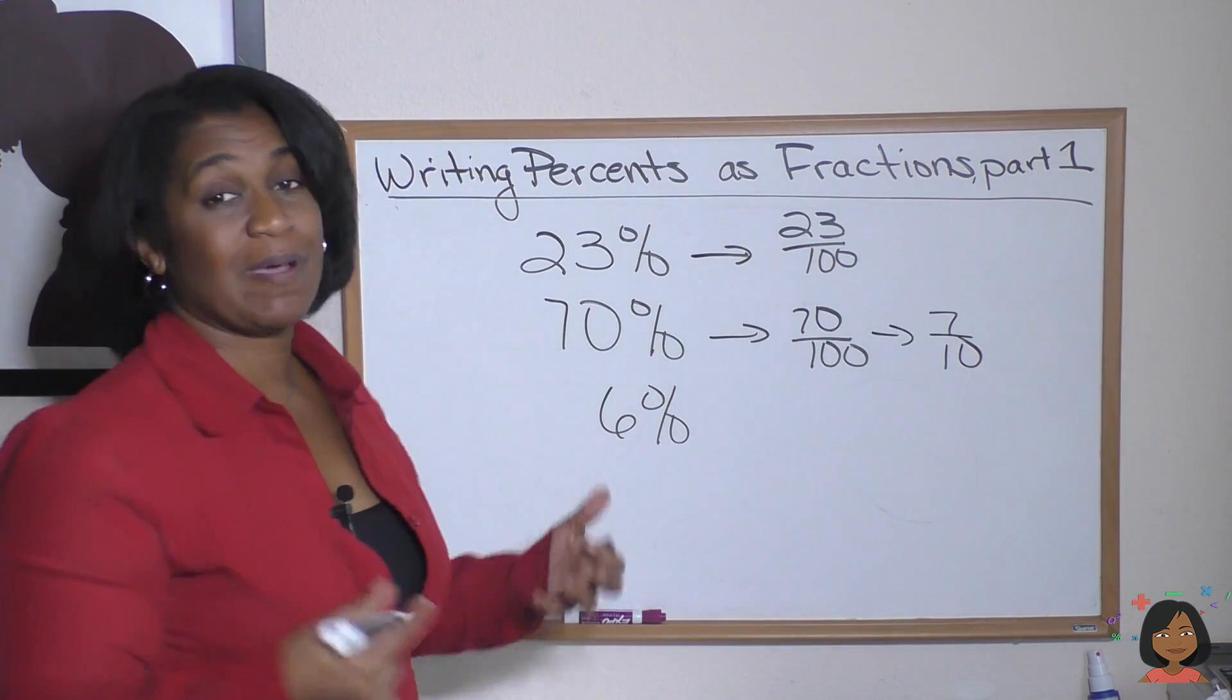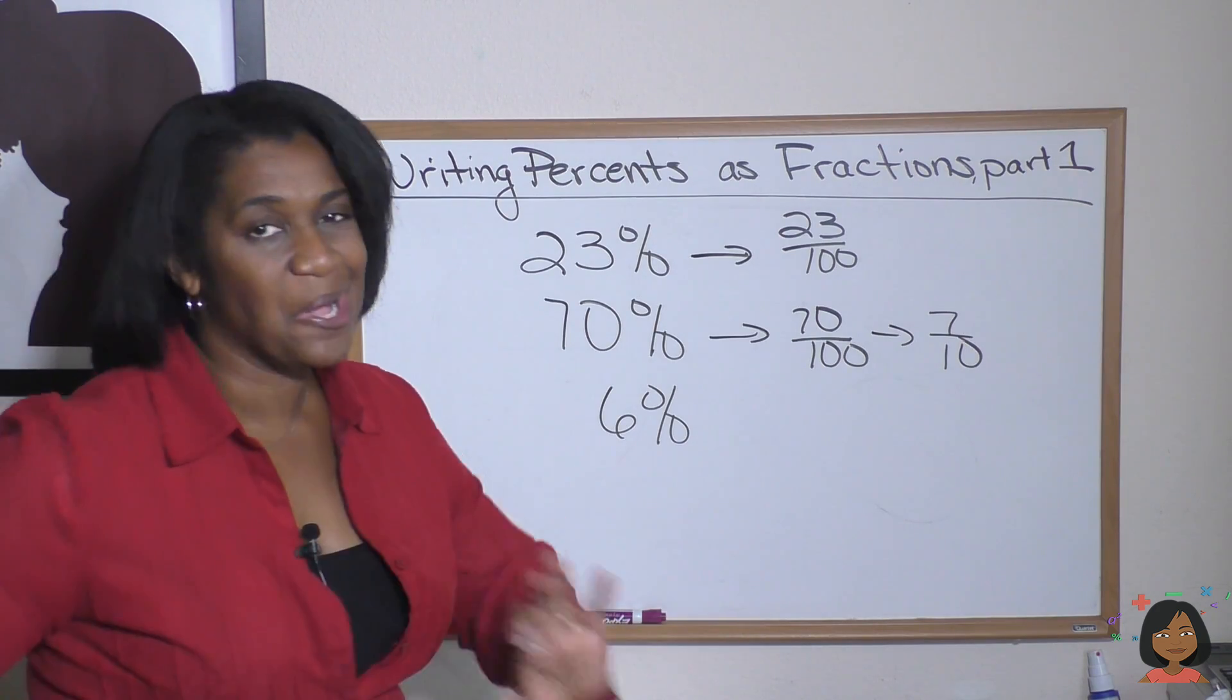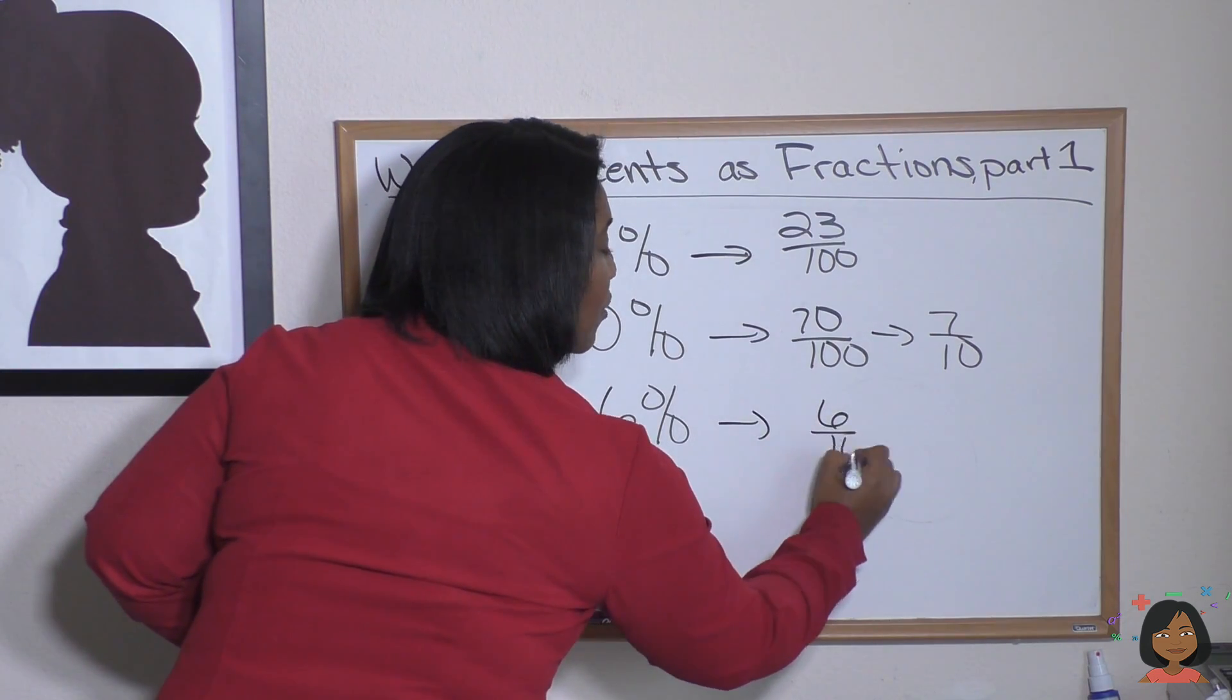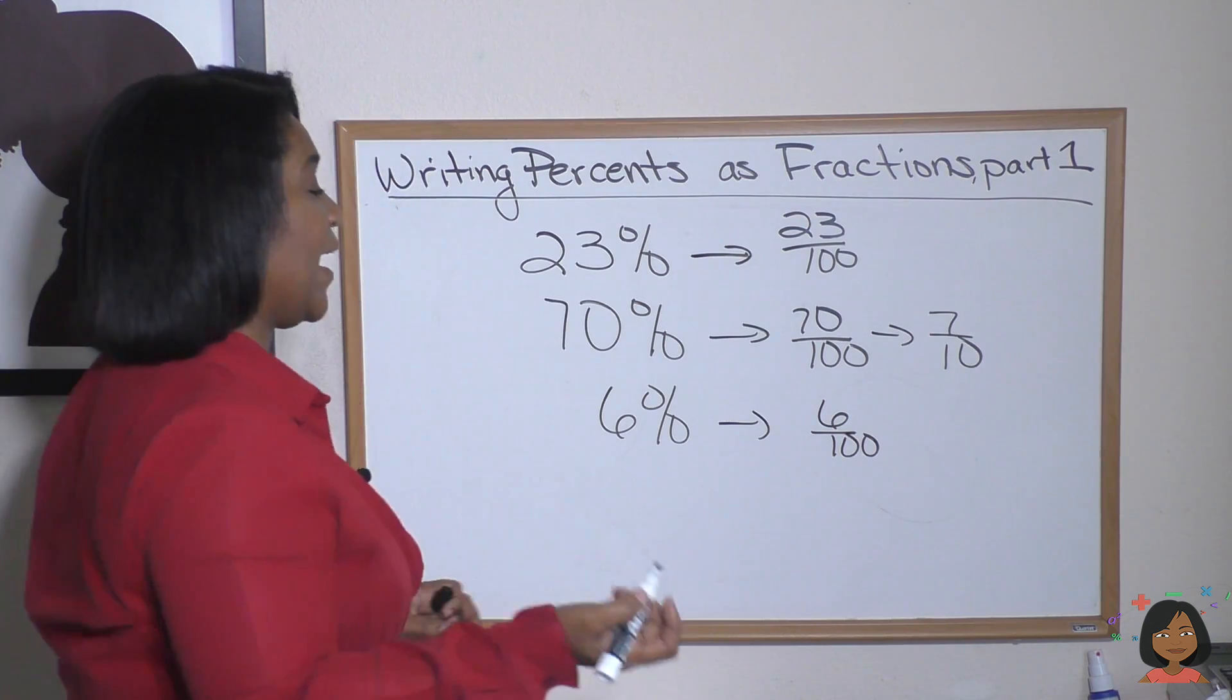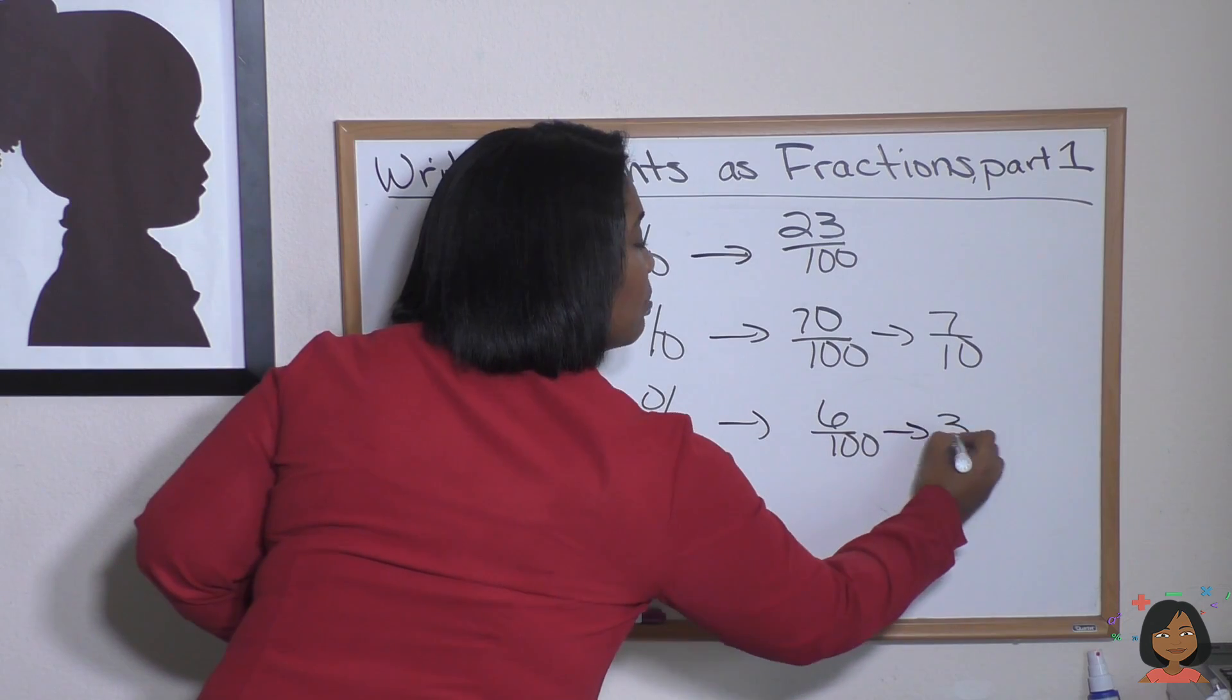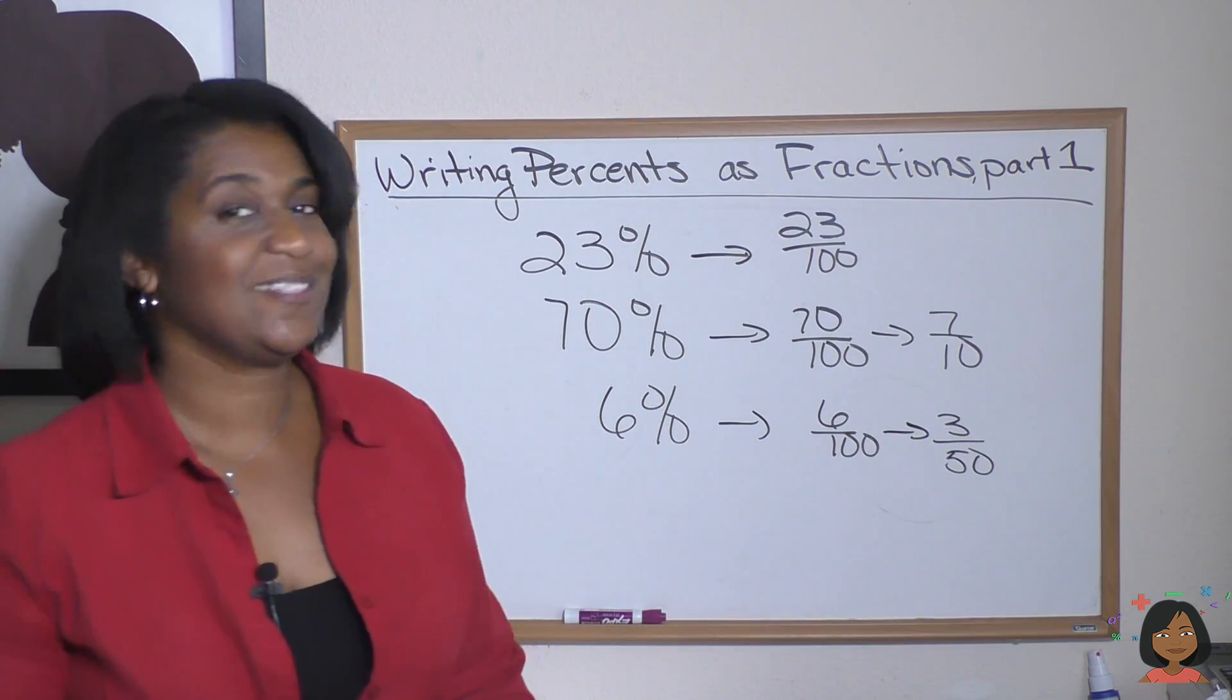One more example: what about 6%? It's still over 100. The denominator is always 100, so here we go, 6 over 100. We look to see if we can simplify, and we can with this one. 2 goes into both of these, so it simplifies down to 3 over 50. And that's it!